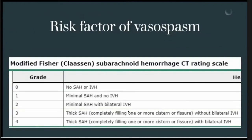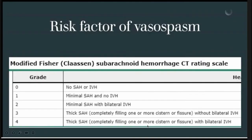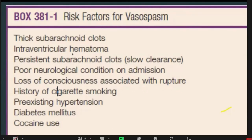The most important risk factor for vasospasm in subarachnoid hemorrhage is the grade of SAH as denoted by the Modified Fisher Scale — higher the grade, higher the risk. It is mostly seen in grade 3 and grade 4. Other risk factors include subarachnoid clots, ventricular hematoma, persistent subarachnoid clots, poor neurological condition on admission, loss of consciousness associated with aneurysm rupture, history of cigarette smoking, pre-existing hypertension, diabetes mellitus, and cocaine use.